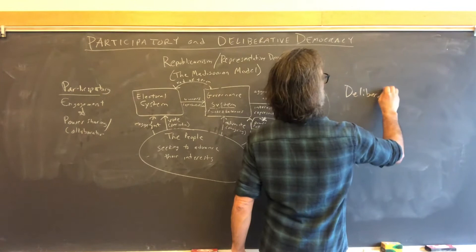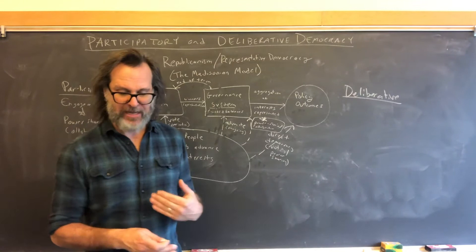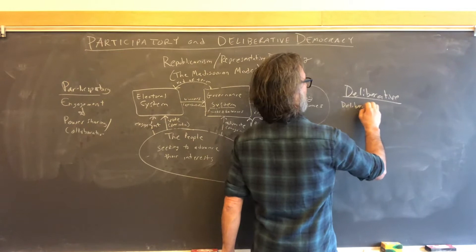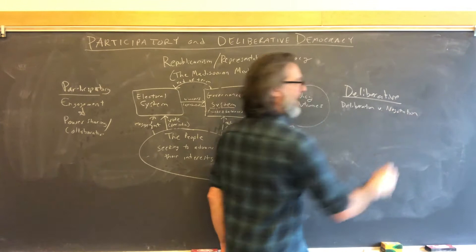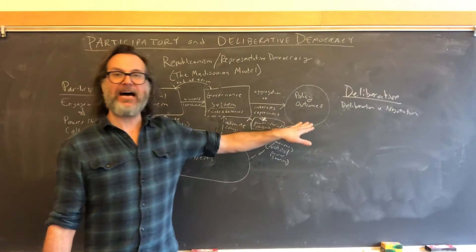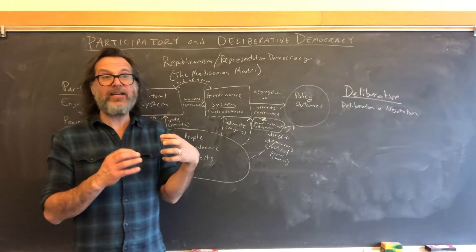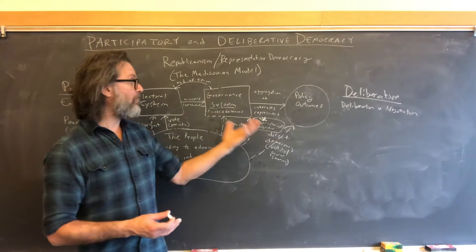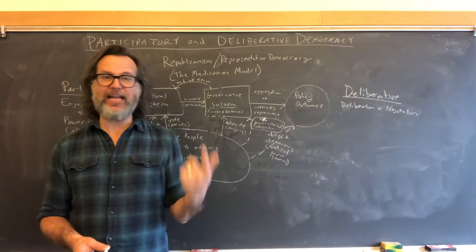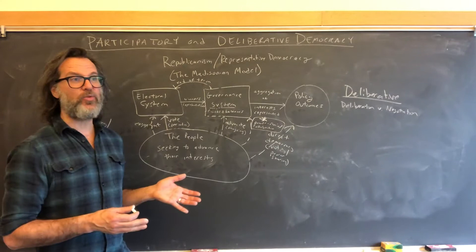Deliberative democracy is about how it is that decisions are made within democratic institutions and processes. Deliberative democracy promotes deliberation over negotiation. Negotiation is really the fundamental political dynamic of the Madisonian model — that's what goes on to create policy outcomes. Elected officials, the winners, represent various interests from around society and negotiate within their caucuses and between different factions to promote policy ideas. State legislatures, city councils, the United States Congress — all are essentially negotiating bodies.